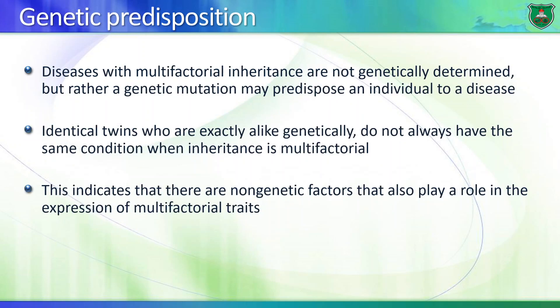Multifactorial inheritance is different from autosomal dominant or recessive inheritance, in that we're not talking about a single mutation in one gene that causes a phenotype. Rather, what happens here is that you have genetic variation — not necessarily mutation — that predisposes an individual to a certain condition or disease.